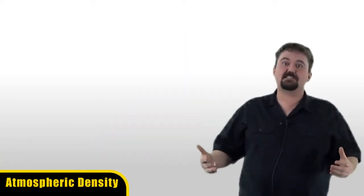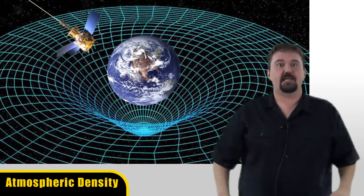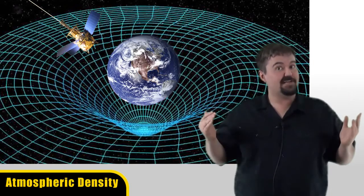Space is empty. Lucky for us, matter likes to clump together due to gravity, which is why we have atmospheric density. The gravity of Earth attracts all the gases that make up our atmosphere, compressing it the closer we get to Earth's surface.